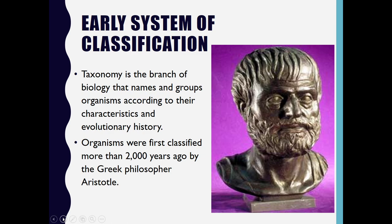The early system of classification: around 2000 years ago, the famous Greek philosopher Aristotle was the first person to classify organisms. Grouping the organisms, naming the organisms, and finding the relationship between different organisms together comes under the branch of biology known as taxonomy. Taxonomy is the branch of biology that names and groups organisms according to their characteristics and evolutionary history.